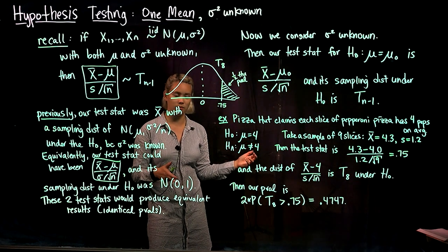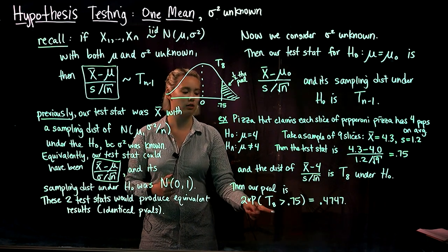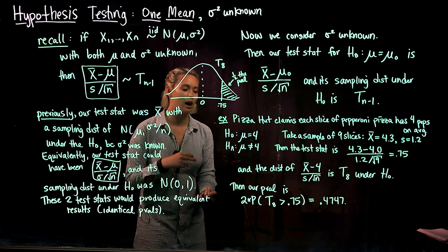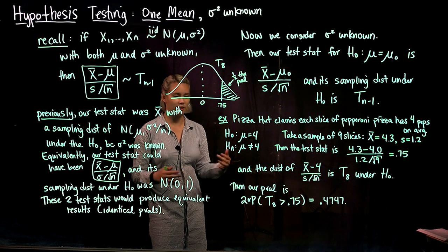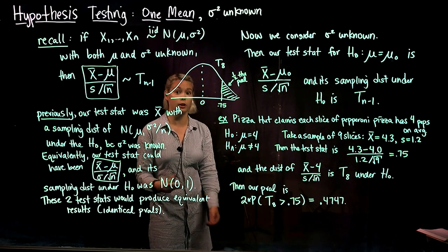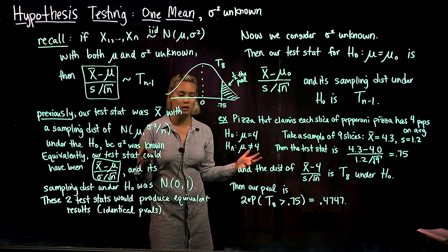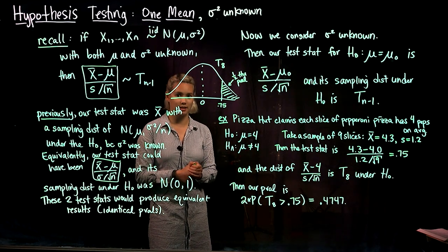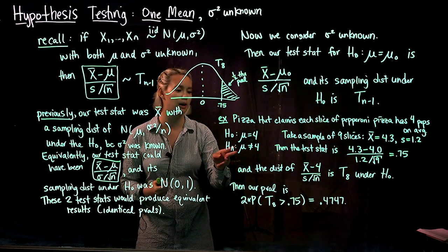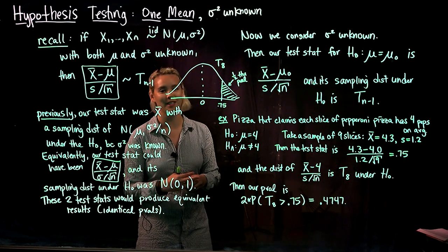Our p-value is two times the probability that a t distribution with eight degrees of freedom is greater than 0.75. Using a table or the pt function in R, we find that our p-value is 0.4747. Because we have a large p-value, we don't have much evidence against the null hypothesis, and in most settings we would not reject it. In other words, we did not find evidence that the mean number of pepperonis on a slice of pizza is different from four, so we keep the conclusion that mu equals four.